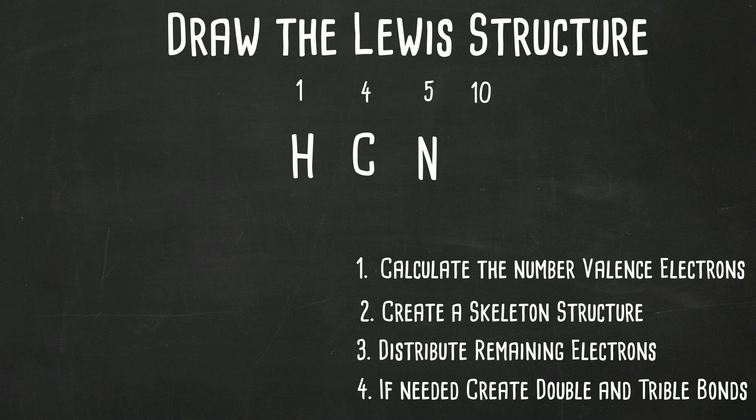Now let's start placing some single bonds. So there's one bond two electrons between hydrogen and carbon and then a bond between carbon and nitrogen. So I have now used up four. I have six remaining.